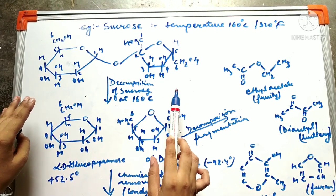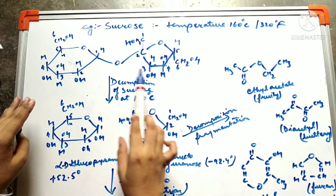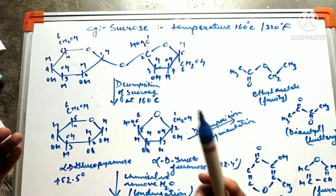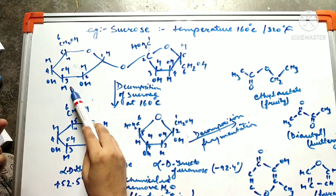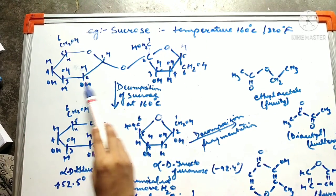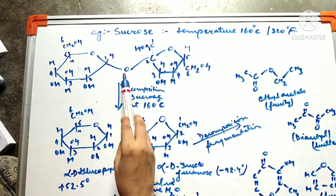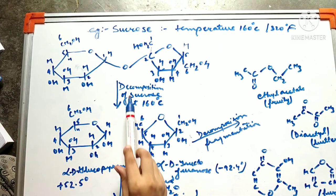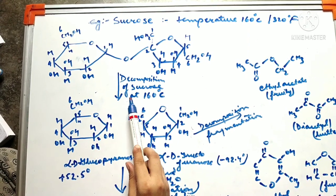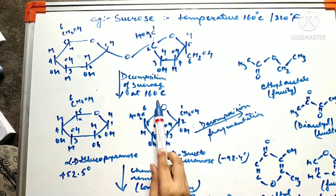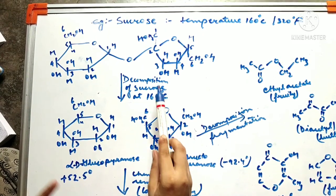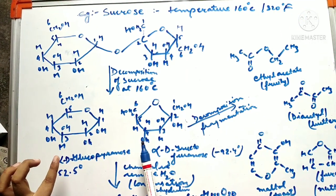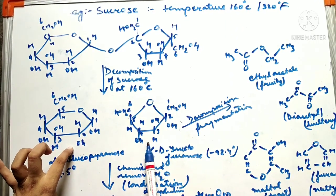Sucrose basically caramelizes at a temperature of 160 degrees Celsius, or 320 degrees Fahrenheit. Sucrose is basically formed with a glycosidic linkage by two components: glucose and fructose. They combine with each other forming a glycosidic linkage to form sucrose. When sucrose is decomposed — when we provide heat at 160 degrees Celsius — it decomposes into two monomers: glucose and fructose, specifically alpha-D-glucopyranose and alpha-D-fructofuranose.